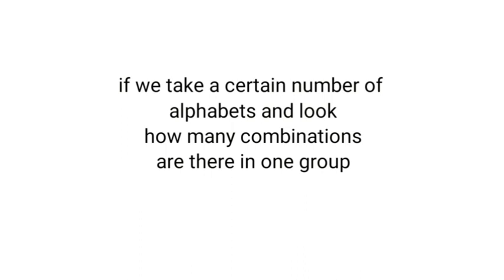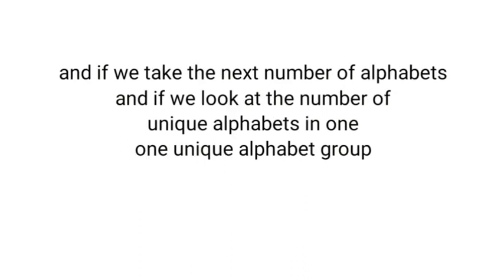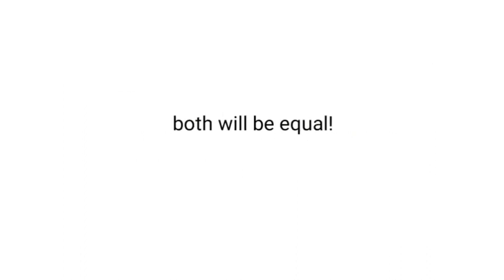Now for some interesting facts about arranging alphabets. If we take ABCDE and then ABCDEF, the total number of combinations for ABCDE and the number of combinations in one group of ABCDEF — amazingly, they will be equal. Also, the number of combinations in one group of ABCDE equals the number of unique combinations in one unique combination group of ABCDEF. You can try that yourself. That's all for this video — please like, share, subscribe, and thanks for watching. See you next time, bye bye!